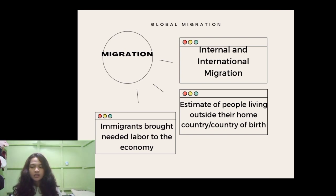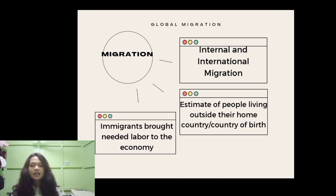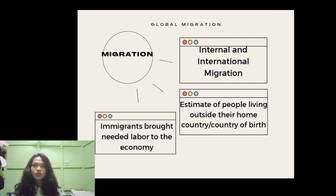According to the McKinsey Global Institute, first-generation immigrants constitute 13 percent of the population in Western Europe, 15 percent in North America, and 48 percent in the GCC countries. The majority of migrants remain in cities — 92 percent in the United States, 95 percent in the United Kingdom, and 99 percent in Australia. Once settled, they contribute enormously to raising the productivity of their host country.